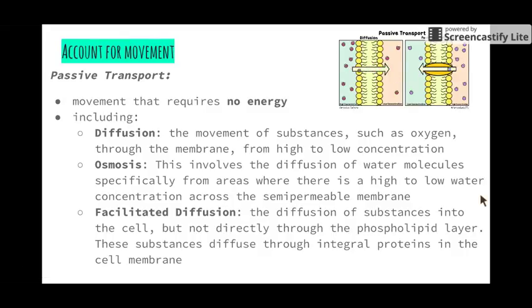Facilitated diffusion is the diffusion of substances into the cell but not directly through the phospholipid layer. These substances diffuse through integral proteins in the cell membrane. In this image we can see diffusion where substances simply move across the cell membrane from an area where there's lots to an area where there's less. Here we have facilitated diffusion, moving from high to low concentration through an integral protein channel.